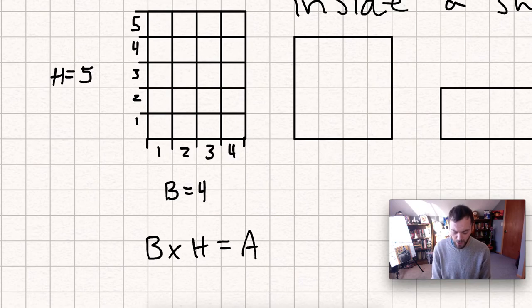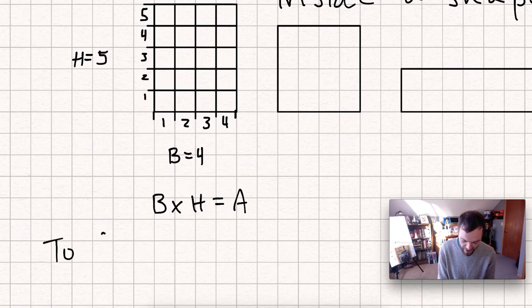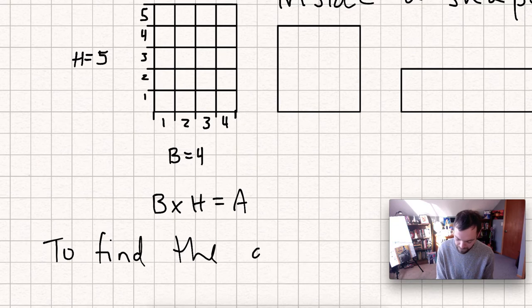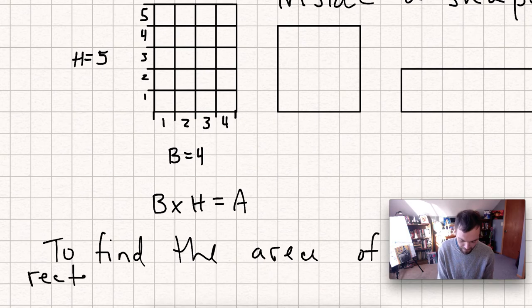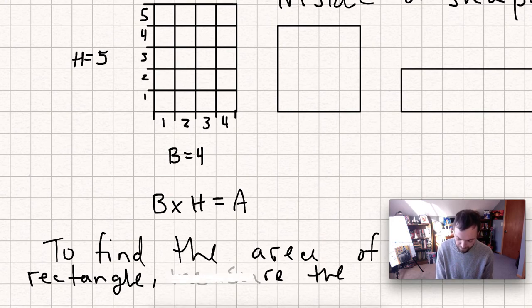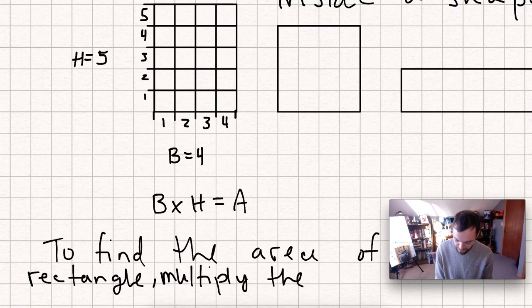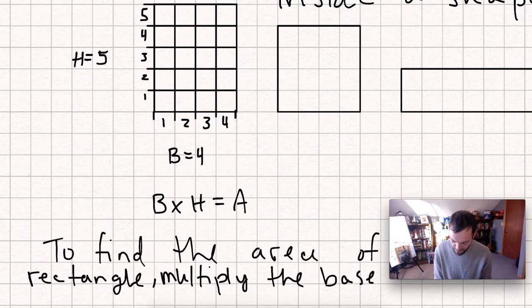So what we know is that we can multiply the base times the height to find the area. So in your math notebook, let's just go ahead and write that down. To find the area of a rectangle, multiply the base times the height.